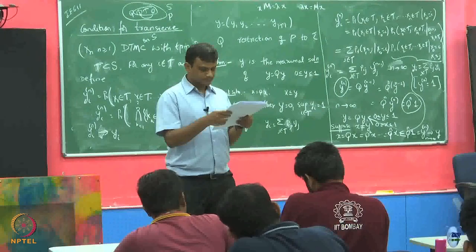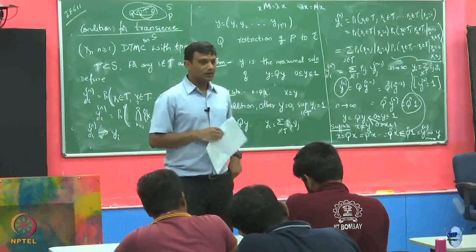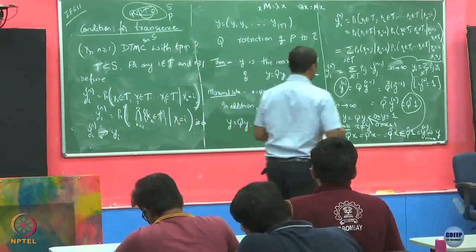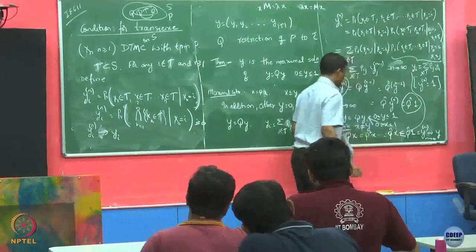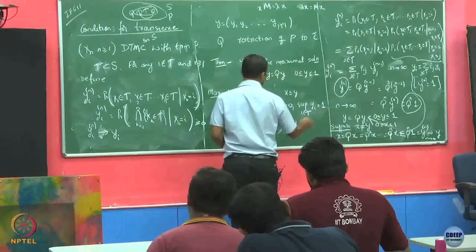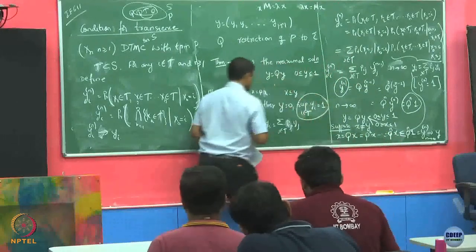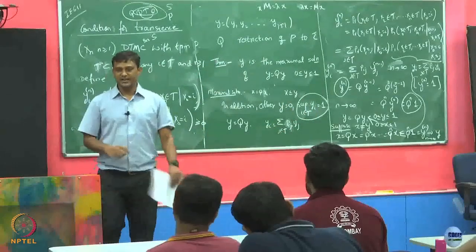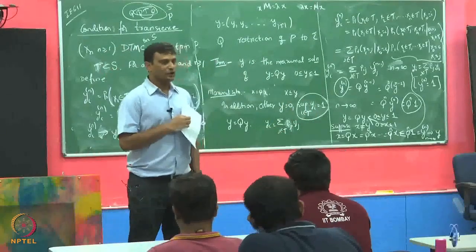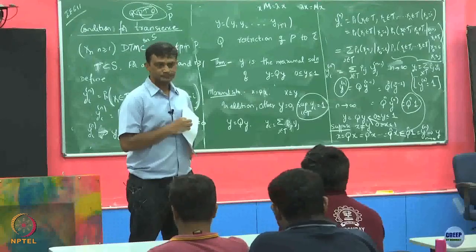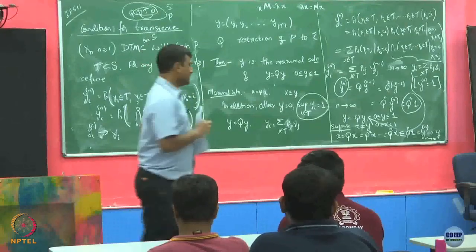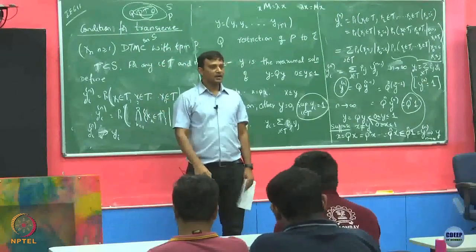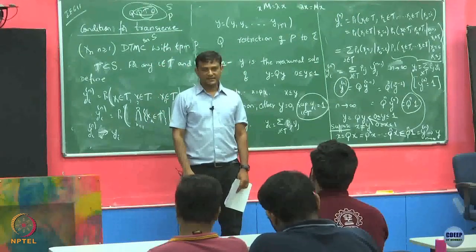We have shown x is the maximum solution — actually Y is the maximal solution. In the interest of time we will skip the part showing that Y must be either 0 or have supremum 1. Let us now see how to express this result and how to use it to come up with a condition for whether a state is transient or recurrent.